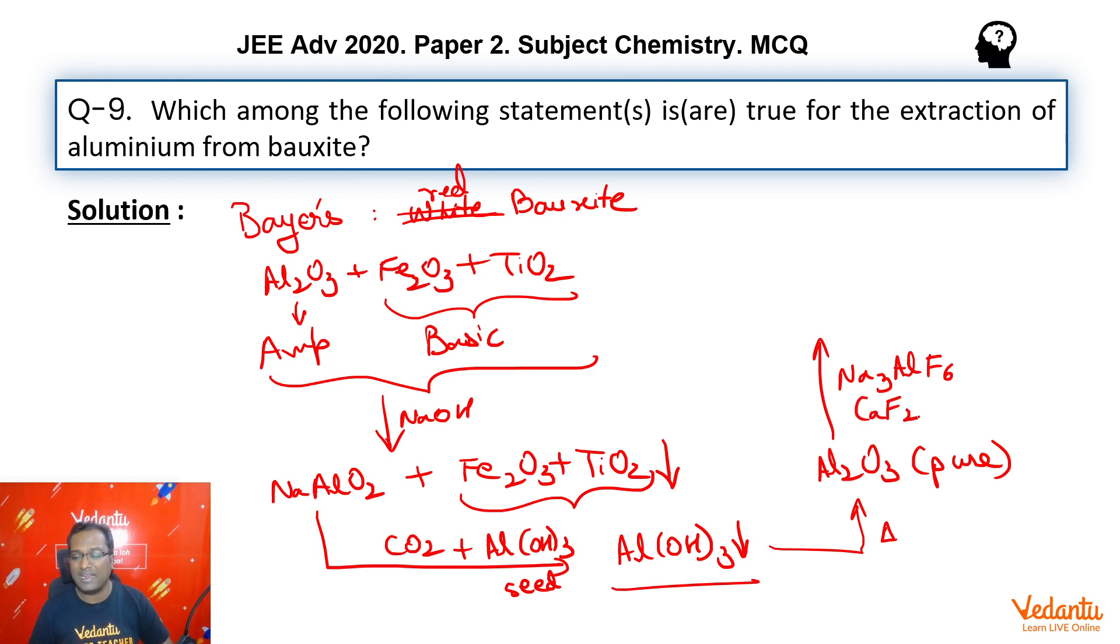We make it undergo electrolysis in molten form. What is the purpose of adding these two? The purpose is lowering down the melting point and increasing the conductivity of the system.